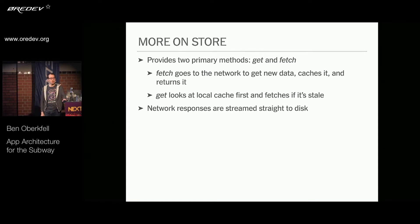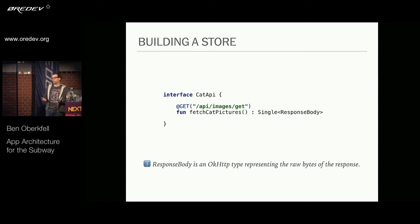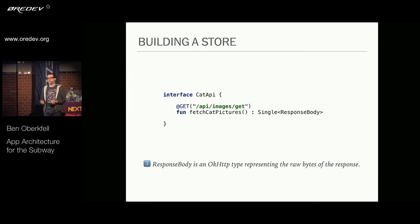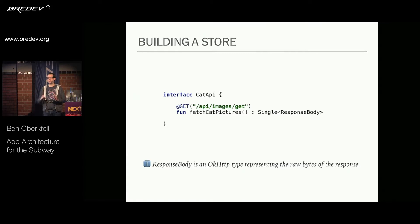So how do we build a Store? Let's look at a Retrofit interface declaration. If you've used Retrofit before, you might be used to getting back a model object using a type adapter plugged into Retrofit to get back deserialized data. With Store, we're going to actually capture a ResponseBody — an OkHTTP type that represents the raw bytes of the response — and that's how we capture the data stream from your network service.